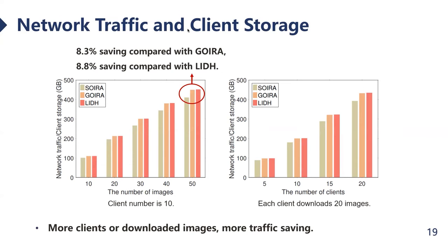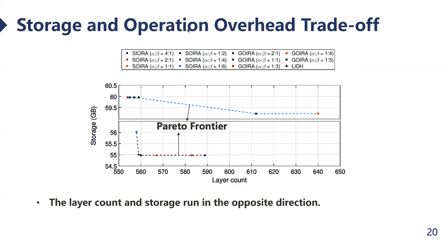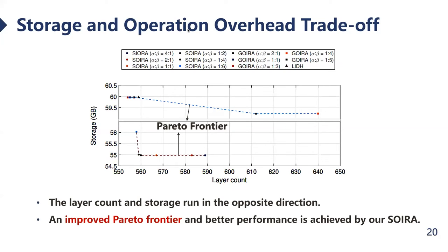The traffic saving increases with the number of downloaded images or clients. Evaluating the trade-off between the proposed algorithm and the greedy algorithm, the value of storage cost and operation cost clearly run in opposite directions — improvement in storage may lead to a decline in layer number. The Pareto curve of the greedy algorithm is at the upper right of the curve of our proposed algorithm, meaning the proposed approach achieves less storage consumption than the greedy with the same layer count. Overall, an improved Pareto frontier is formed and better performance is obtained by our proposed algorithm.